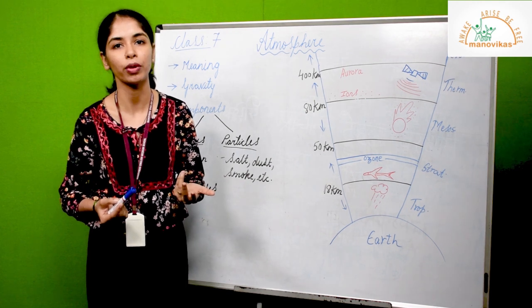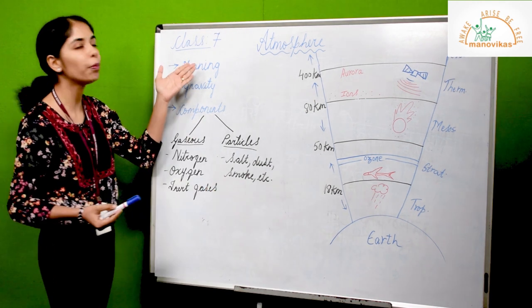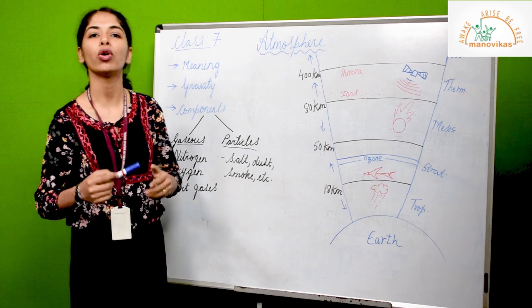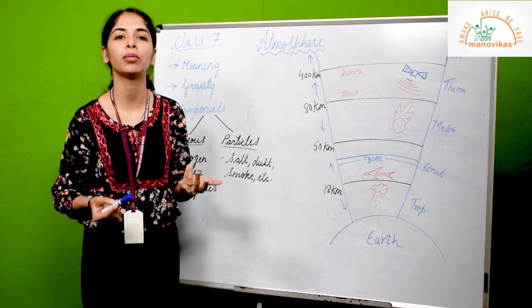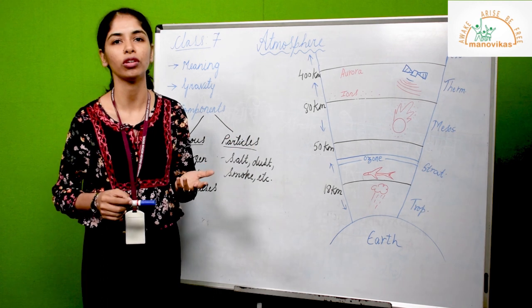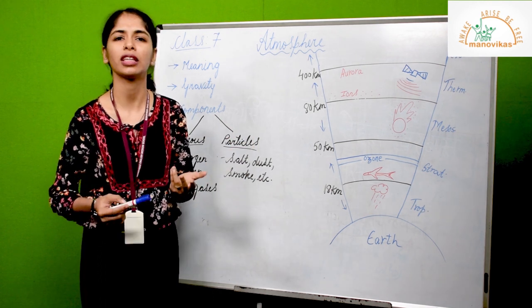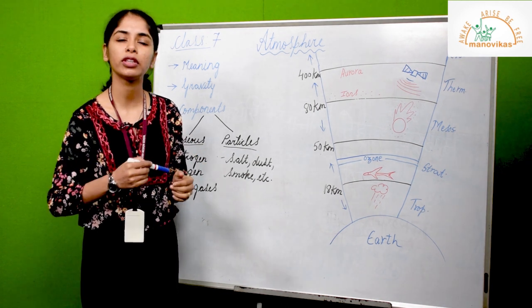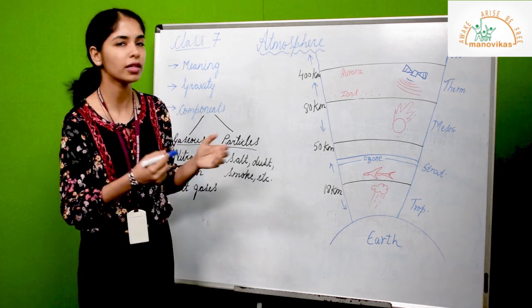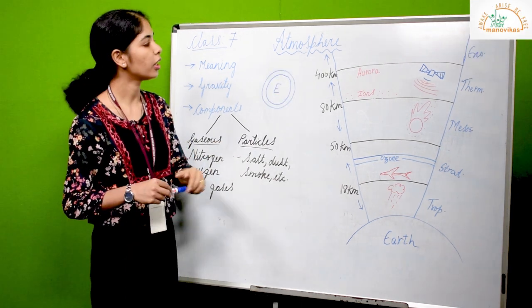This air is sometimes also referred to as atmosphere. What is atmosphere in simple words? Atmosphere is nothing but gases that surround the earth, or in other words, it's a thin layer of gas which surrounds the earth.